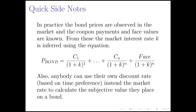In practice, it's often the case that you're observing the prices rather than calculating them, and you also know the coupon payments C1 through CN and the face value — all these parameters are known. So the thing you're actually figuring out is what the market interest rate K is. This is one way to figure out how the market is discounting the future, because you're solving for the rate that makes the present value equal to the observed price.